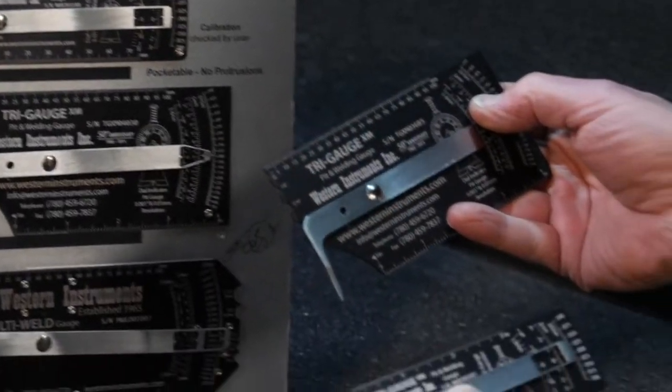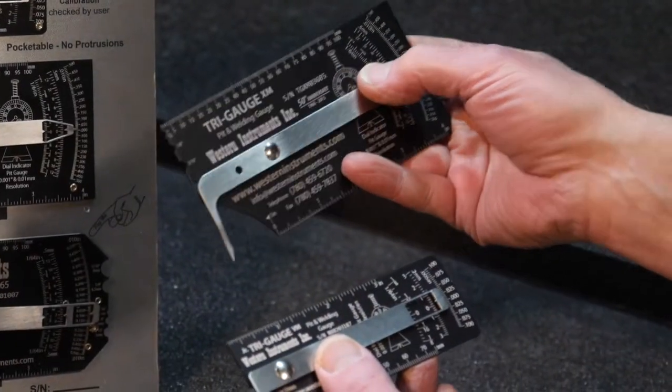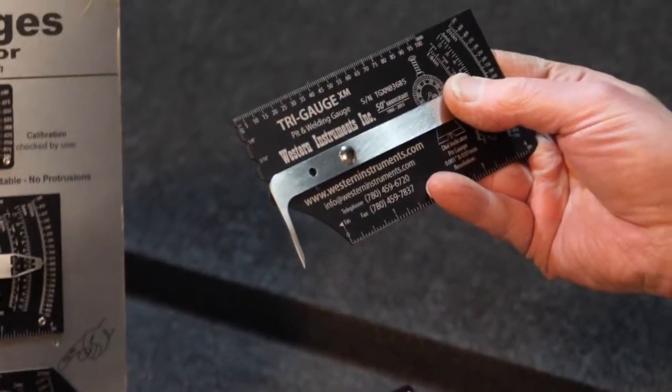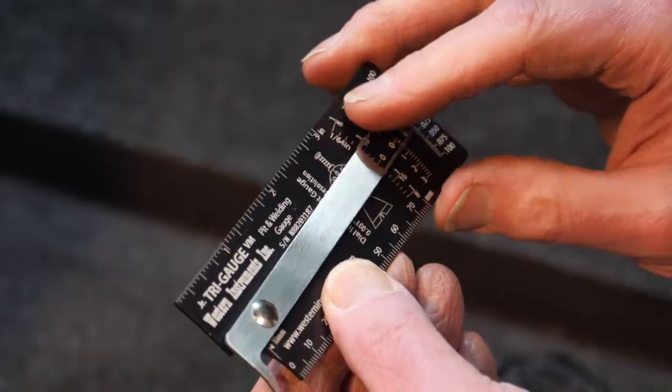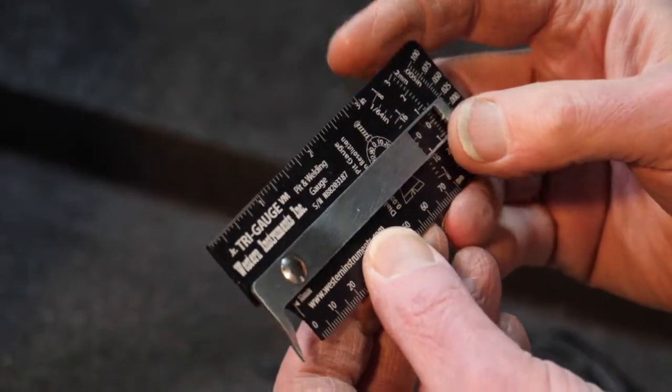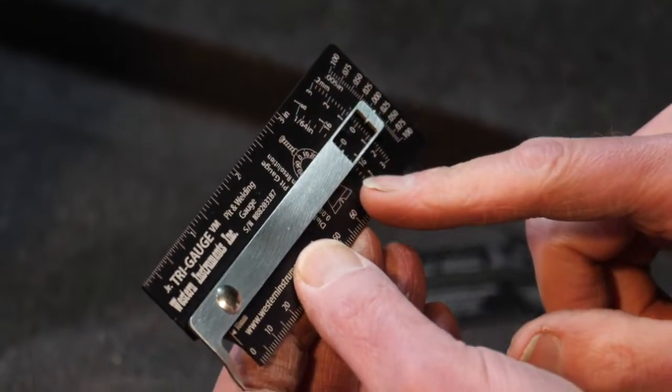This is ten thou, half a millimeter, or sixteenth of an inch. So they wanted to measure in ten thou or five thou increments.